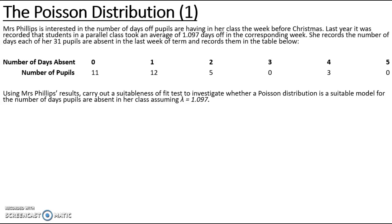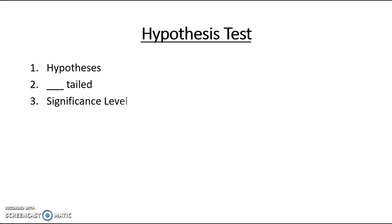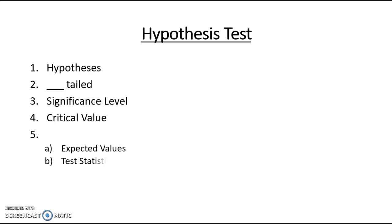The question is asking us to carry out a goodness of fit test for a Poisson distribution. When we do a hypothesis test, there are seven steps to go through: state our hypotheses, determine if it's one or two tailed and the significance level, find the critical value, calculate expected values, compute the test statistic, compare the test statistic with the critical value, and make a conclusion.